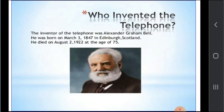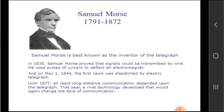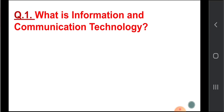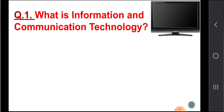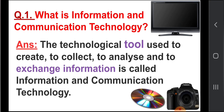This covers information in our life, Chapter 12, for Grade 4. Who invented the telephone? The inventor of the telephone was Alexander Graham Bell. He was born on March 3, 1847 in Edinburgh, Scotland, and died in August 1922 at the age of 75. Question one: what is information and communication technology? The technological tool used to create, collect, analyze, and exchange information is called ICT.